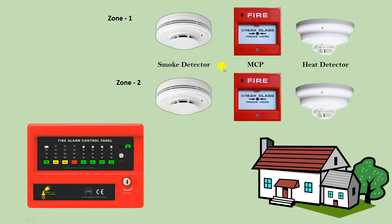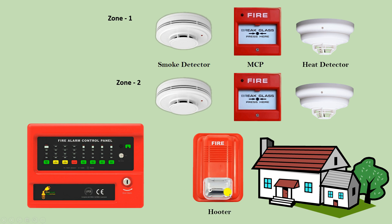This control panel monitors the detectors and generates an output so we know there is fire. Besides the control panel, we also use a hooter — you can use multiple hooters if you want. Whenever there is fire this hooter starts making sound. Besides these devices we also use a resistor, known as an EOL resistor. What is its use, I will explain later.